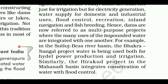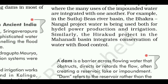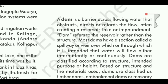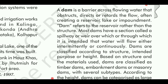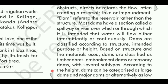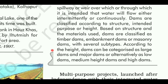For example, in the Sutlej-Beas river basin, the Bhakra-Nangal project uses water for hydroelectric power production and irrigation. Similarly, the Hirakud project in the Mahanadi basin integrates conservation of water with flood control. A dam is a barrier across flowing water that obstructs, directs, or retards the flow, often creating a reservoir, lake, or impoundment. Most dams have a spillway or weir over which water flows intermittently or continuously. Dams are classified according to structure, intended purpose, or height — as timber dams, embankment dams, or masonry dams, and as low, medium-height, or high dams.